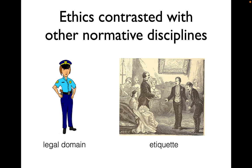Ethics is a normative domain because it is trying to address the question of how we ought to live — not how we do live, but how we ought to live. There are other normative domains that are important to contrast with ethics. One would be the domain of law. There are all kinds of legal rules and laws that we are supposed to follow — if the speed limit is 55, then you ought to drive 55 miles an hour.